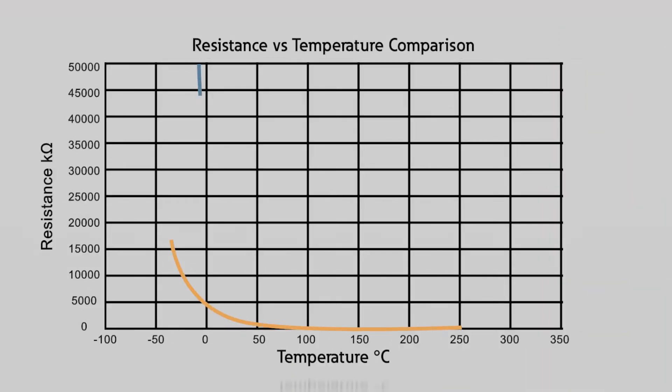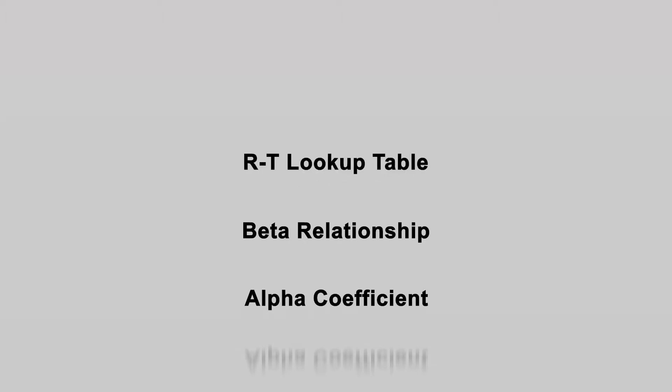Engineers often use four different methods of defining the thermistor temperature change. From good to best, these are the alpha coefficient, the beta relationship, an RT lookup table, and the Steinhardt-Hart coefficients.